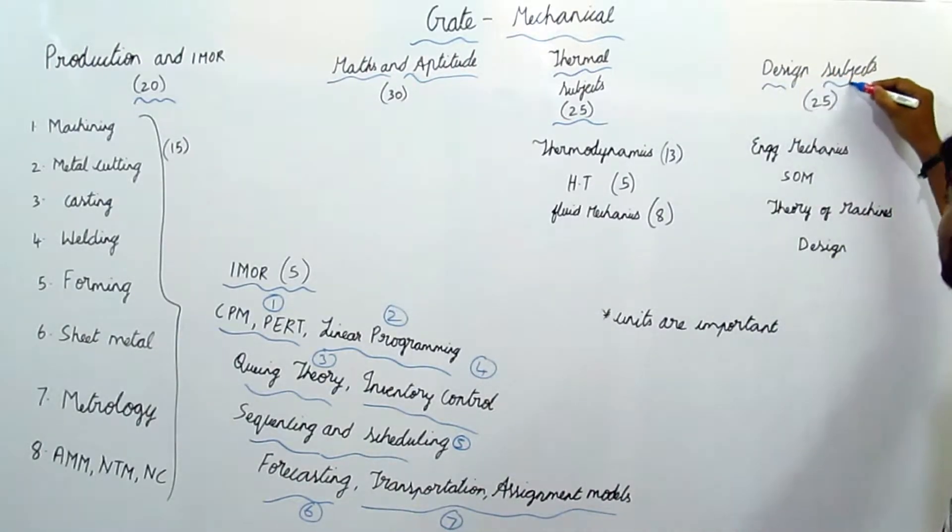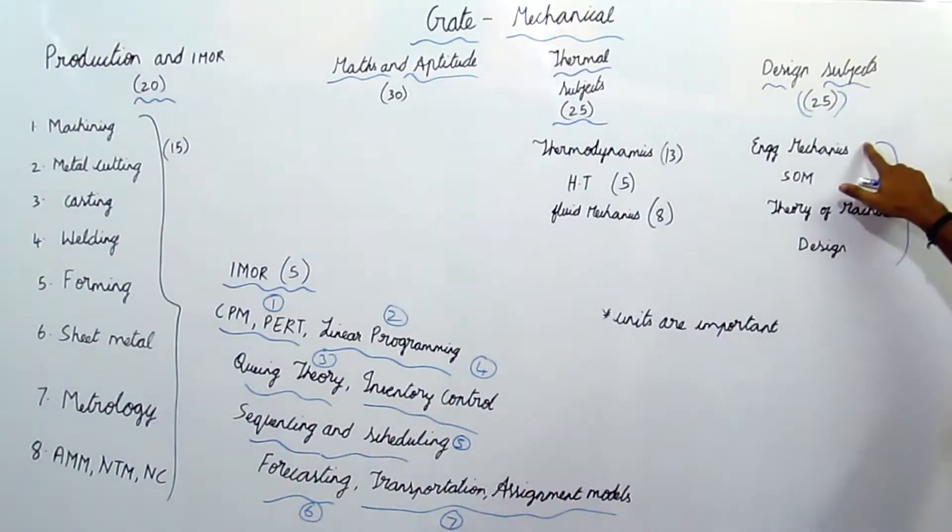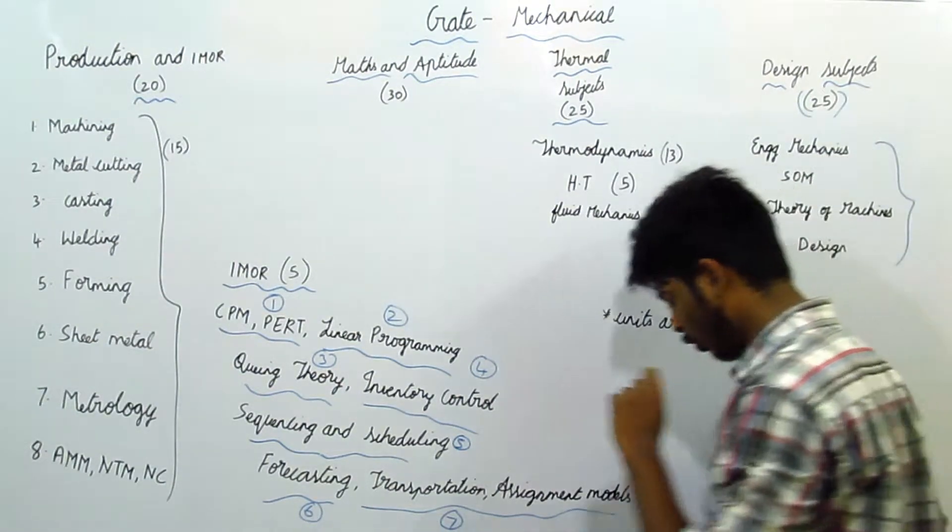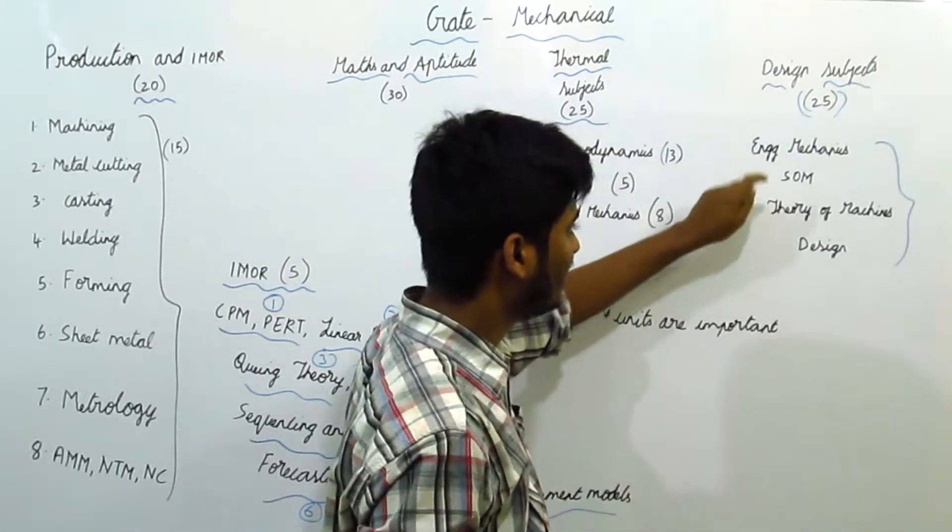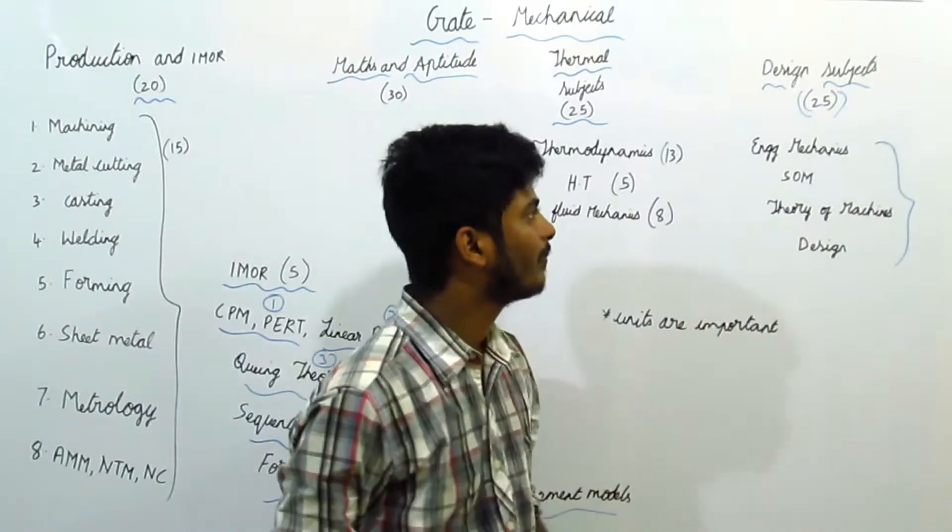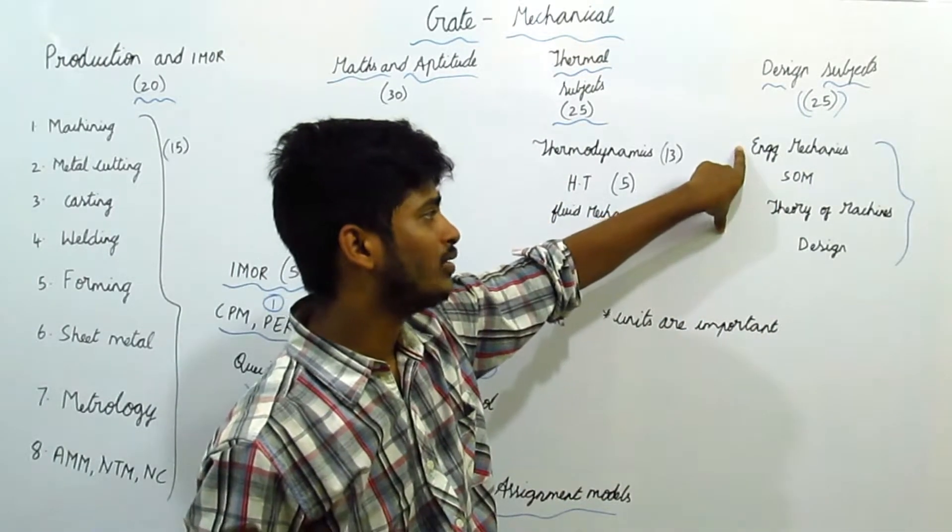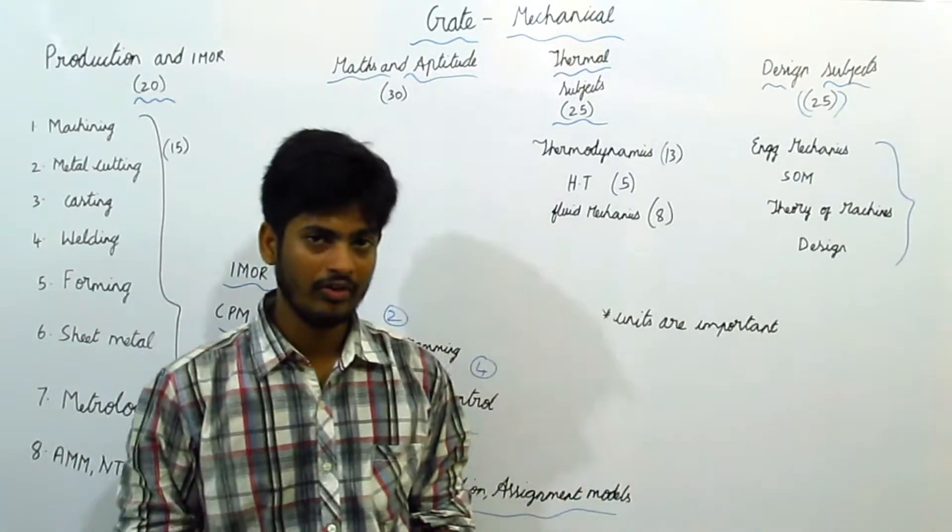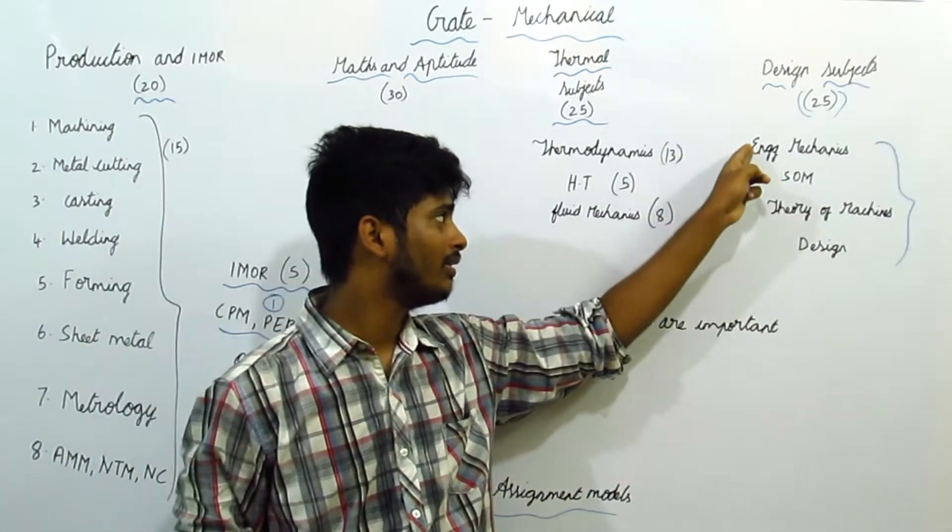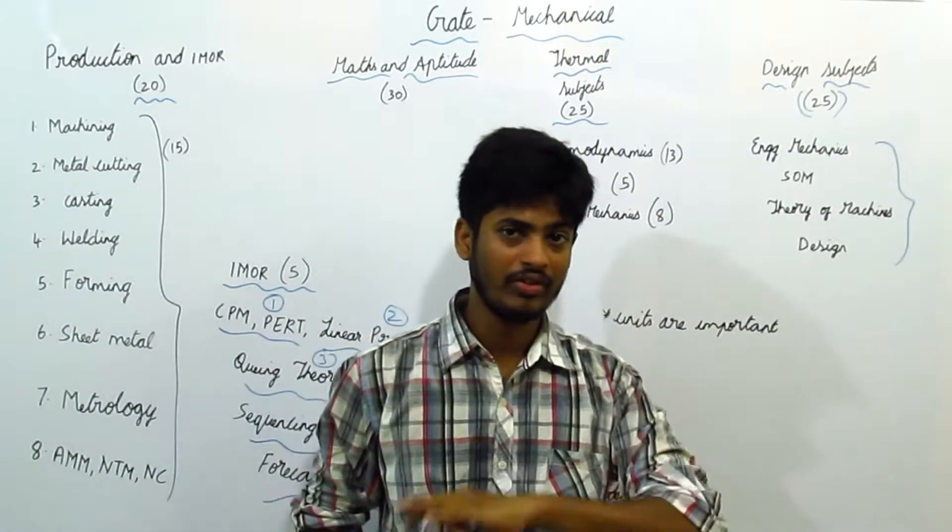Next, coming to design subjects. Design subjects combined from 25 marks. Under this, we have four topics: mechanics, strength of materials, theory of machines, and design. You have to study all these topics in same order. Basis of engineering mechanics is physics, basic fundamental physics. Engineering mechanics are derived from basic fundamental physics.